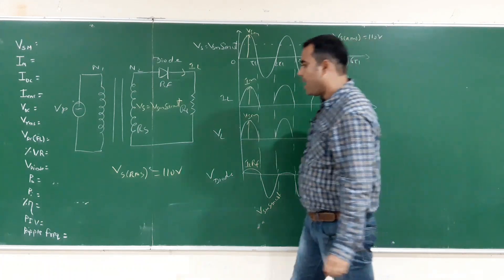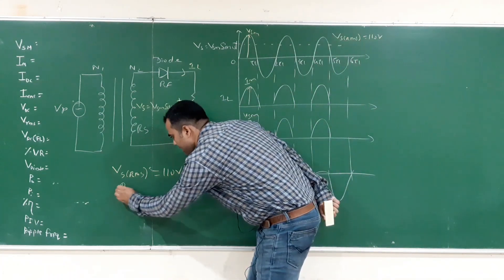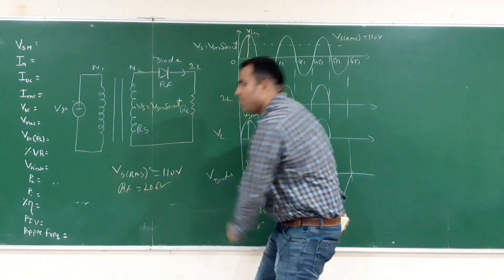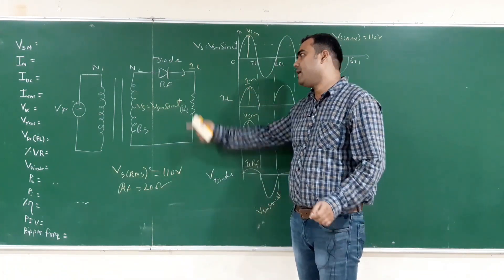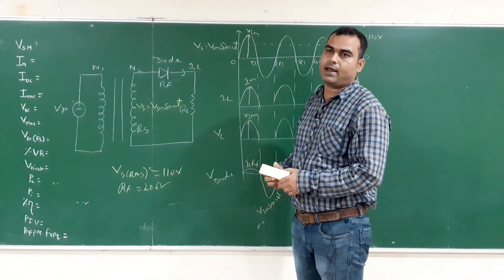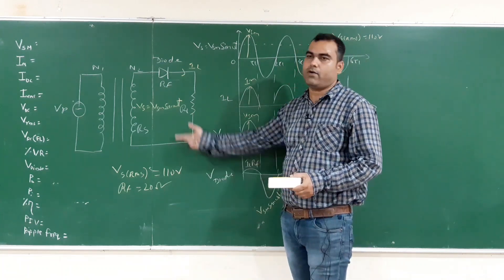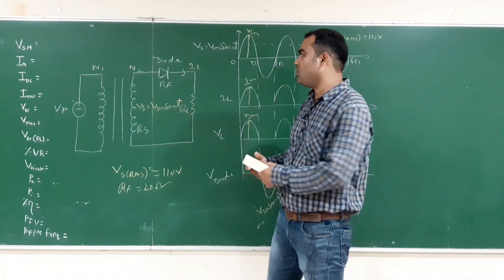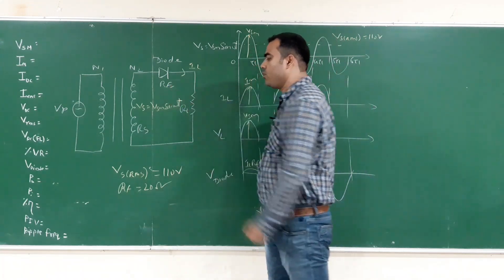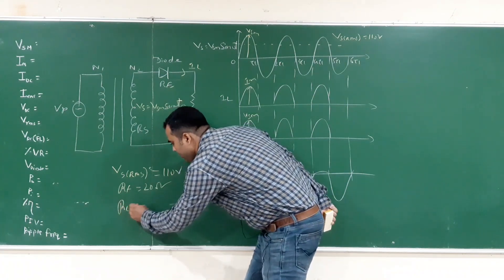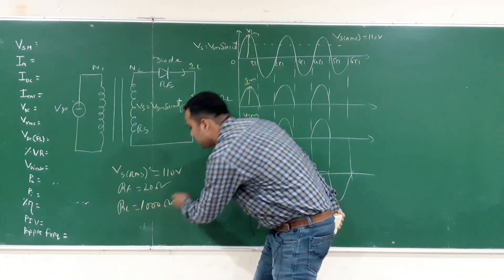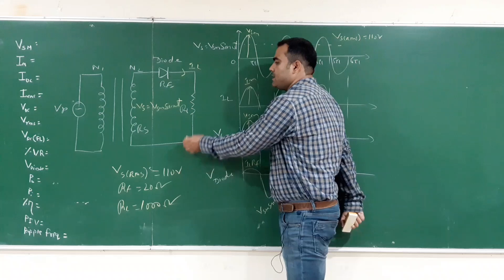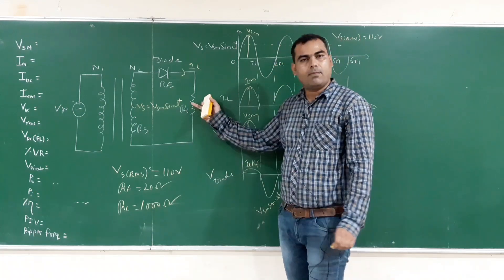And a diode, a single diode is given, whose internal resistance is 20 ohm. A single diode is used only in half wave rectifier and whose internal resistance is 20 ohm. RF value is 20 ohm. And load resistance RL equals to 1 kilo ohm that means 1000 ohm.